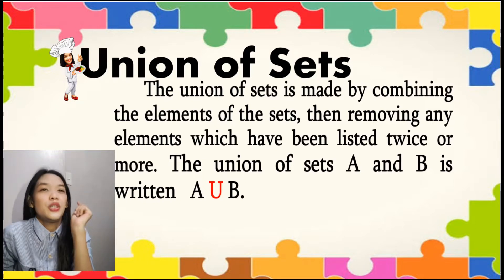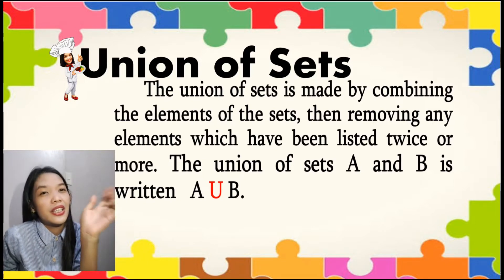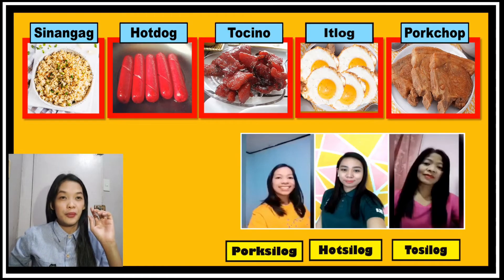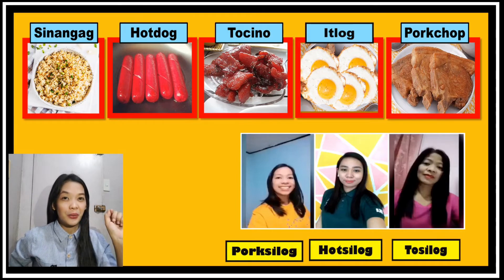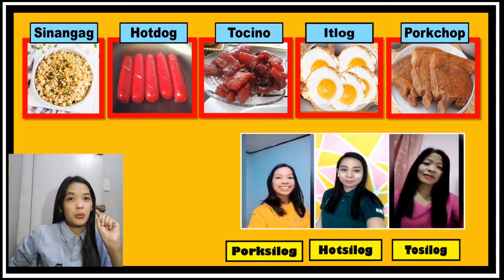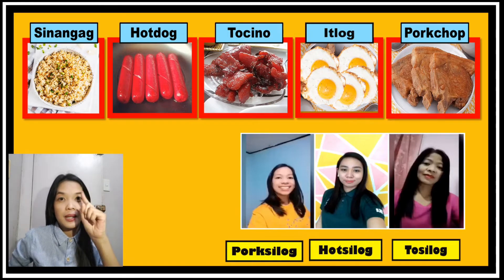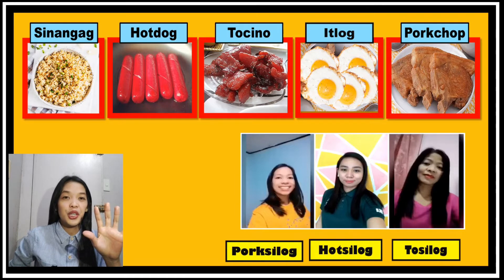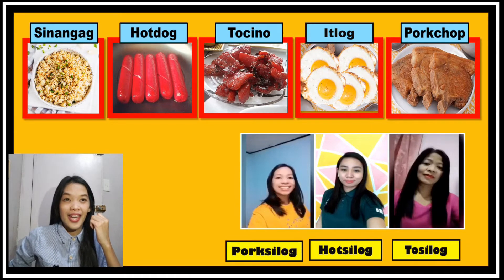Now what do we mean by that? Let us relate it to the virtual role play that we had a while ago. On the first one, Ms. Eden ordered pork silok. It is named as one, but it's not really one. It is because pork silok means pork chop, sinangag, and itlog. As you observed, we are combining three members.